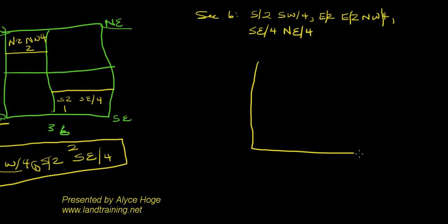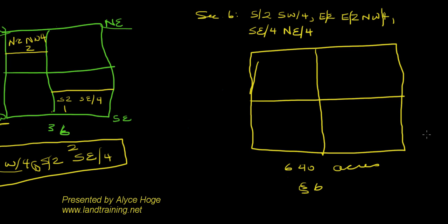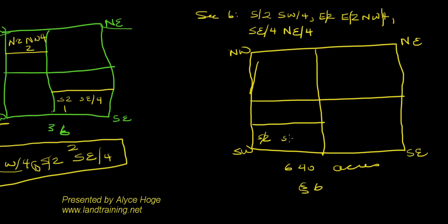Let's pretend this is a perfect square of 640 acres and this is Section 6. The first thing I do is put my designations on the corners: northeast corner, southeast corner, northwest corner, and southwest corner. We know we start in the southwest quarter, so this is going to be the south half of the southwest quarter — that's tract one.